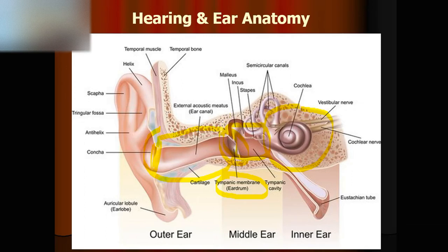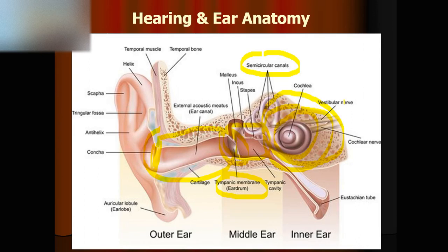What would happen if we have issues in the inner ear? In the inner ear, we have two portions. One is called semicircular canals, and portion two is called the cochlea. The semicircular canals are for balancing, and the cochlea is for hearing. If you have blood flow issues or infection inside the semicircular canals, you may experience vertigo or dizziness, sometimes nausea.